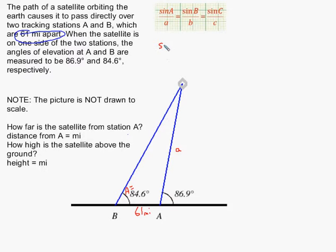So far I have sine of 84.6 degrees divided by little a equals sine of B, which I don't have. The only other side given is 61, so to make use of that, I'm going to let little b be 61 miles.